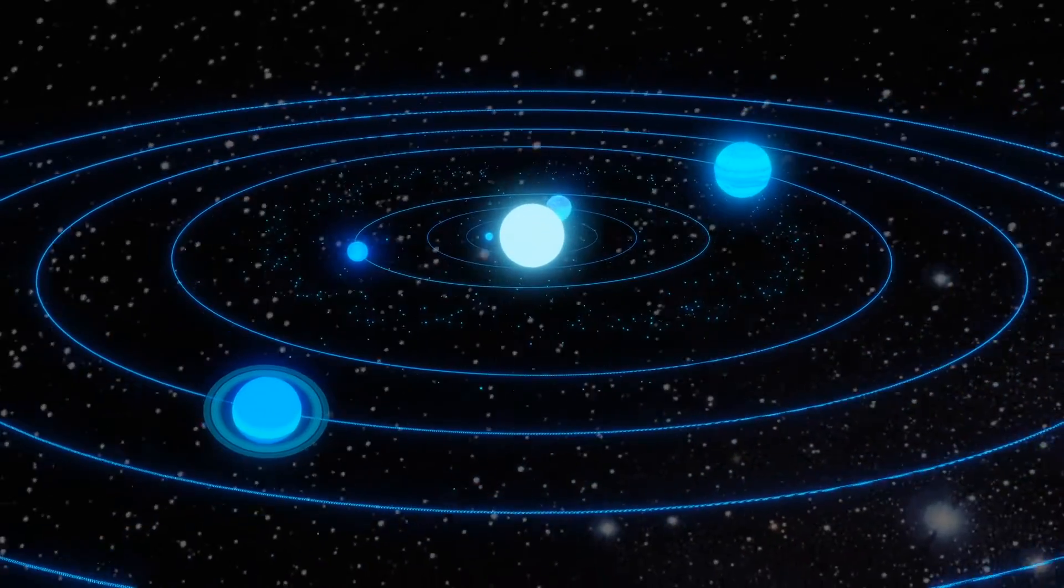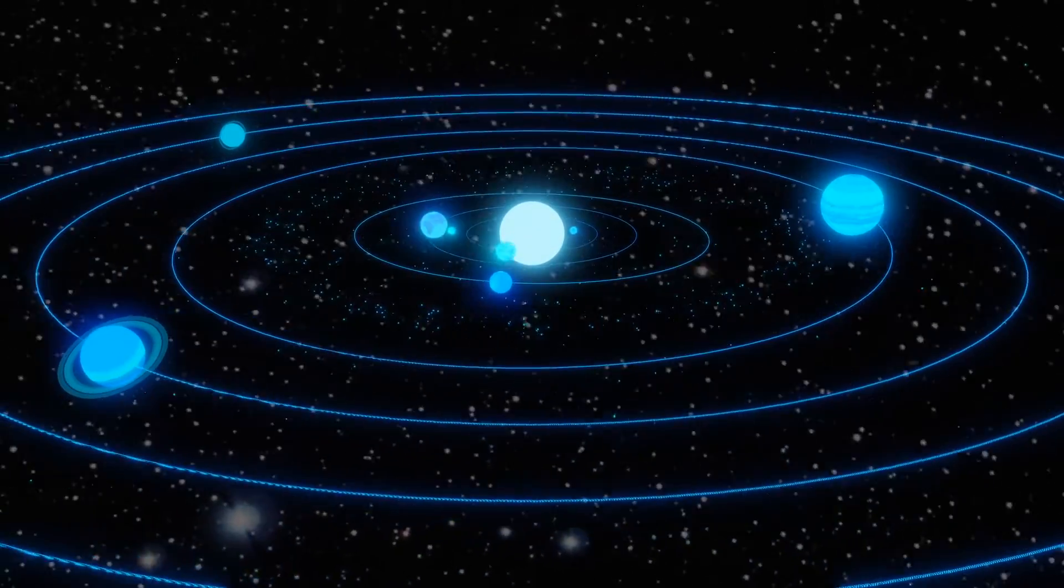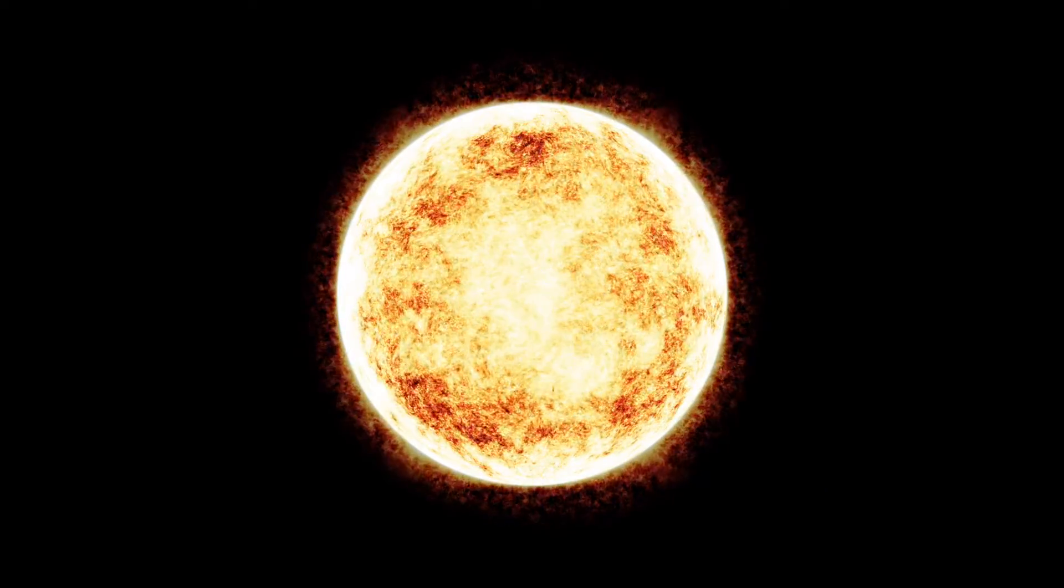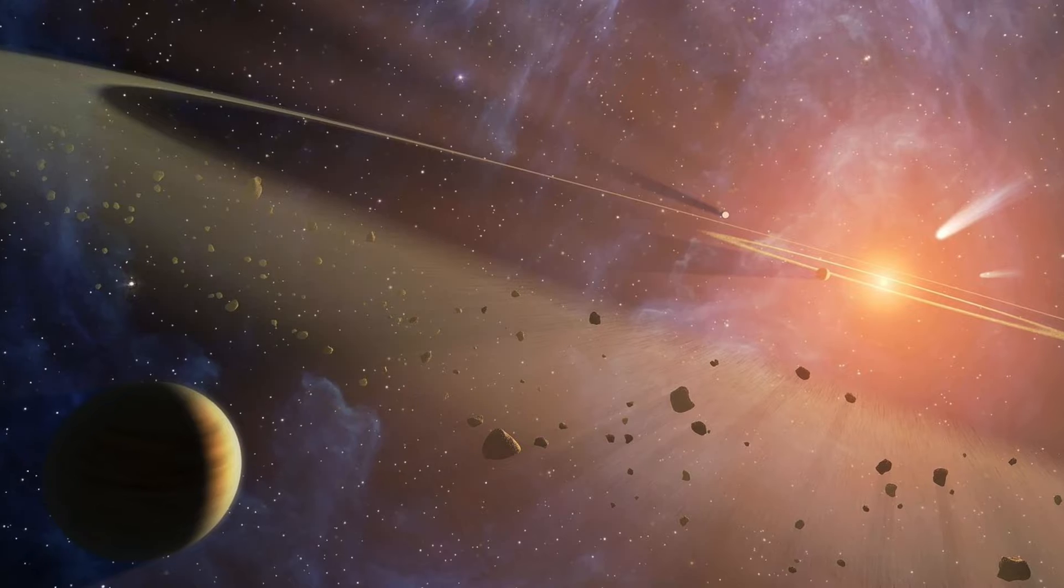Jupiter is 5.2 AU from the Sun, while Saturn is 9.5 AU. It's very cold out there. At those distances, if we considered just the Sun's energy alone, we'd expect the ice moons to be frozen solid. They are not because of tidal heating.